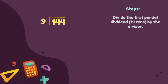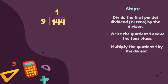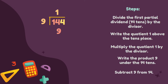First step, divide the first partial dividend by the divisor. 14 divided by 9 is equal to 1. Write the quotient above the 10th place — so we are going to write 1 above 14. Multiply the quotient 1 by the divisor: 1 times 9 is equal to 9. Write the product 9 under the 14. Subtract 9 from 14: 14 minus 9 is equal to 5.